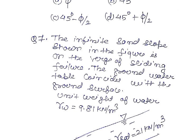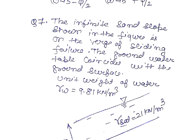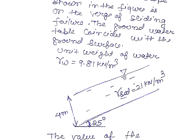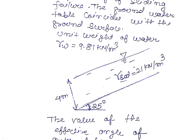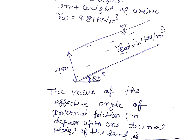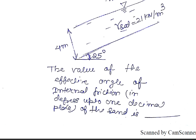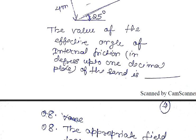Question number 7. The infinite sand slope shown in the figure is on the verge of sliding failure. The ground water table coincides with the ground surface. Unit weight of water gamma w is 9.81 kN per meter cube. These are the diagrams given. In this question, we have to find out the value of the effective angle of internal friction in degrees up to 1 decimal place. This is a fill up the blank type.